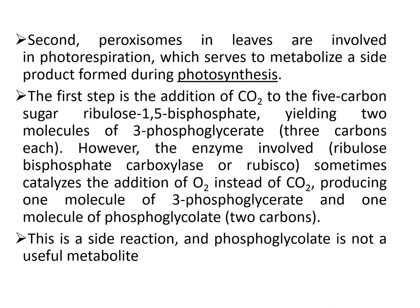Second, peroxisomes in leaves are involved in photorespiration, which serves to metabolize a side product formed during photosynthesis. In photosynthesis, carbon dioxide is converted to carbohydrate by the Calvin cycle. The first step is the addition of carbon dioxide to the five-carbon sugar ribulose-1,5-bisphosphate, yielding two molecules of 3-phosphoglycerate. However, the enzyme RuBisCO sometimes catalyzes the addition of oxygen instead of carbon dioxide, producing one molecule of 3-phosphoglycerate and one molecule of 2-carbon phosphoglycolate. This is a side reaction and phosphoglycolate is not a useful metabolite.